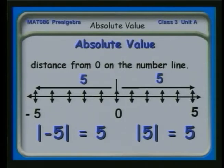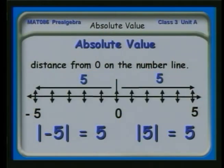The absolute value is indicated with two bars. When I see those parallel bars, I'm talking about not the direction but just how far I've gone. So the absolute value of minus five is five. Similarly, the absolute value of five is five. Either way, the absolute value is a positive number — whether the integer inside is positive or negative, the absolute value is positive because it's the distance you walk regardless of the direction.